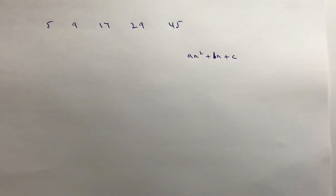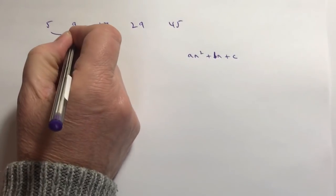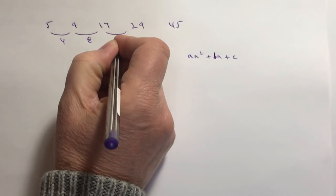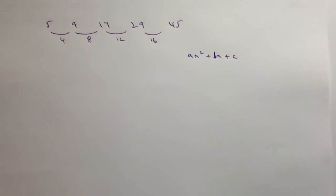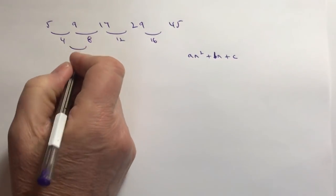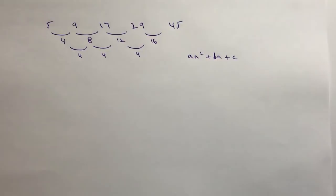What people are usually aware of is that with quadratic sequences we need to work out what's called the second difference. So this is the first difference between each of the numbers, and the second difference works out in this particular sequence as 4.